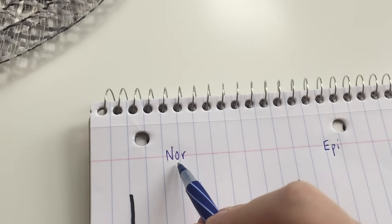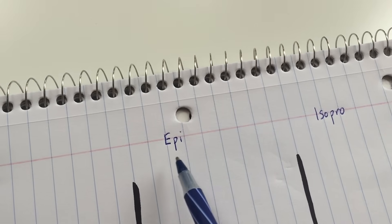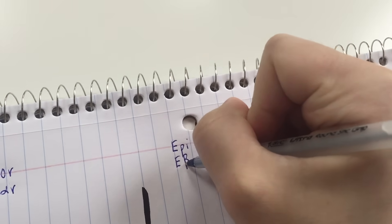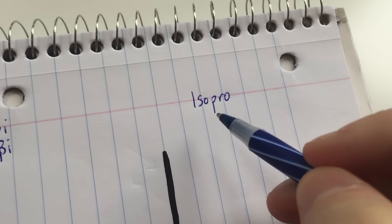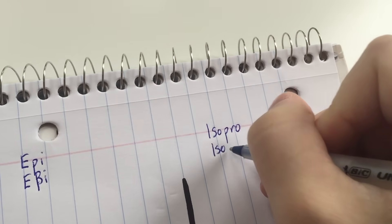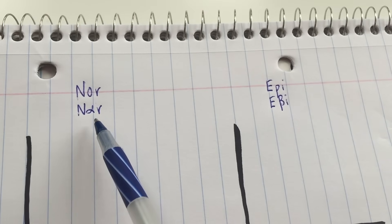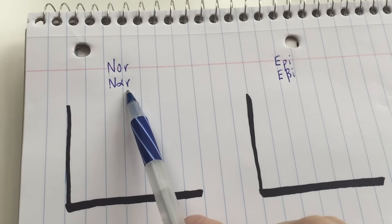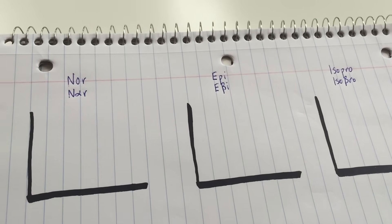Now, change two of the letters to indicate alpha or beta activity. In norepinephrine, change the O to alpha — because alpha looks like an O — so 'nor' becomes 'n-α-r'. In epinephrine and isoproterenol, change the P's to betas: 'epi' becomes 'ebi' (ebinephrine), and 'isoproterenol' becomes 'isobr-oterenol'. So P's become betas and O becomes alpha — meaning norepinephrine is more alpha-acting, while epinephrine and isoproterenol are more beta-acting.